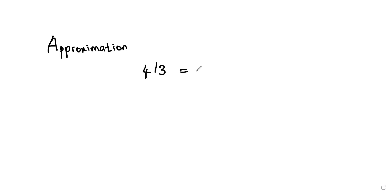In this video we are going to learn what is meant by approximation and what methods we follow to approximate a decimal number. First, we need to understand why we need approximation. For example, take a calculator — when doing a sum, the calculator will only store a certain number of digits. We know that a fraction like four divided by three gives a decimal value of 1.333... continuing infinitely, but the calculator cannot store that infinite number in its storage.